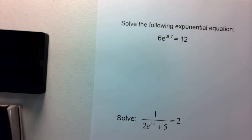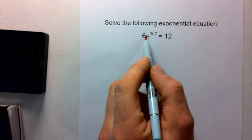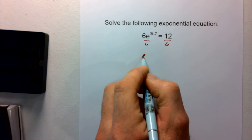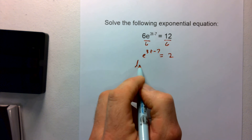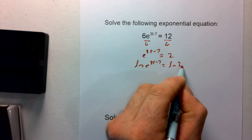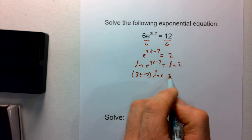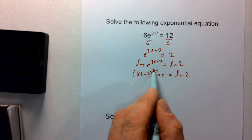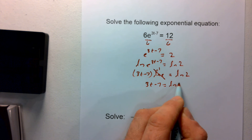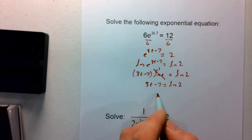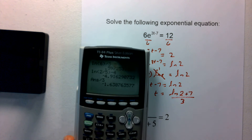We've got two more examples, very similar to what we've seen. For this one, we get e by itself by dividing by 6, giving us e to the 3t−7 equals 2. Taking the natural log of both sides: the natural log of e to the 3t−7 equals the natural log of 2. We bring that exponent to the front: 3t−7 times natural log of e equals the natural log of 2. Since the natural log of e is 1, we get 3t−7 equals the natural log of 2. Adding 7 and dividing by 3 gives t equals the natural log of 2 plus 7, all divided by 3.